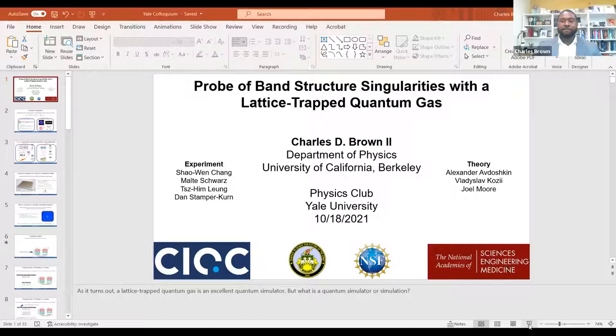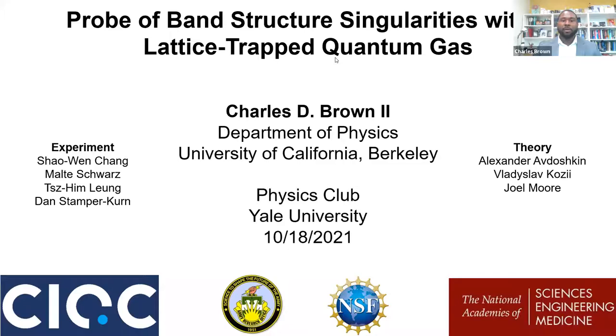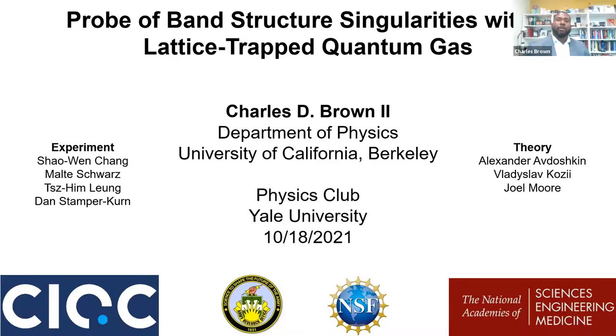After his PhD, Charles went to the University of California at Berkeley where he joined Dan Stamper-Kurn's group. There he has been studying ultra-cold atoms in optical lattices with a focus on topological properties and many-body effects in exotic band structures, and that's the work he's presenting today. Thank you, Jack, for the introduction. I'm excited to be here and tell you about the work I've been doing.